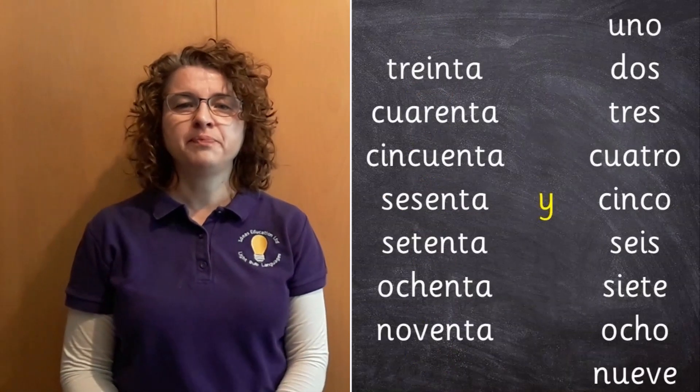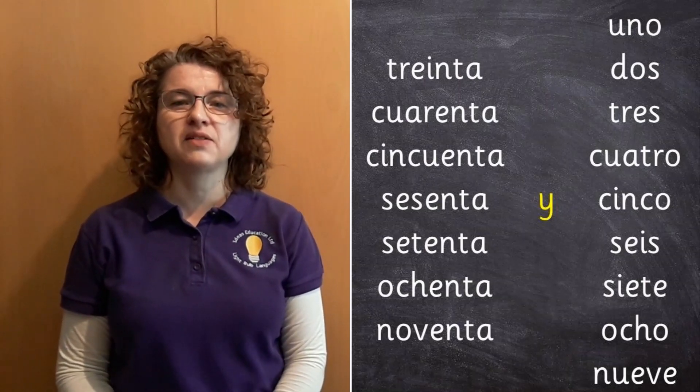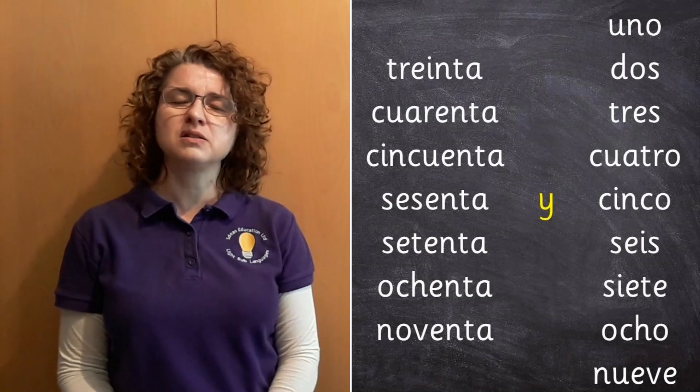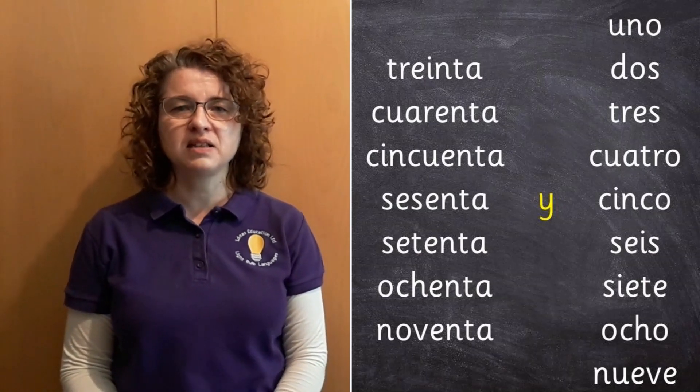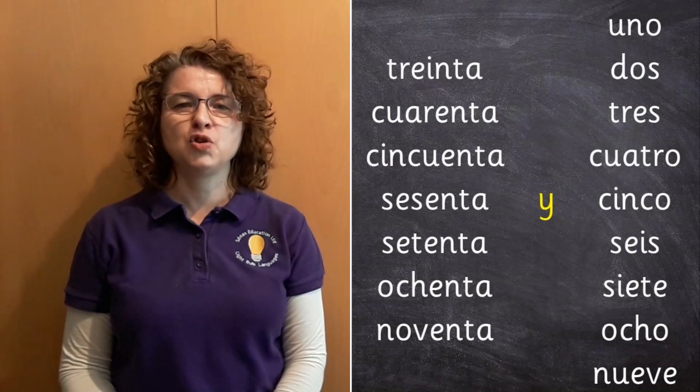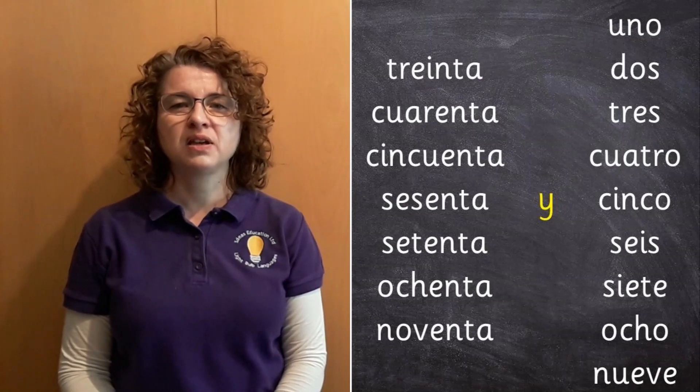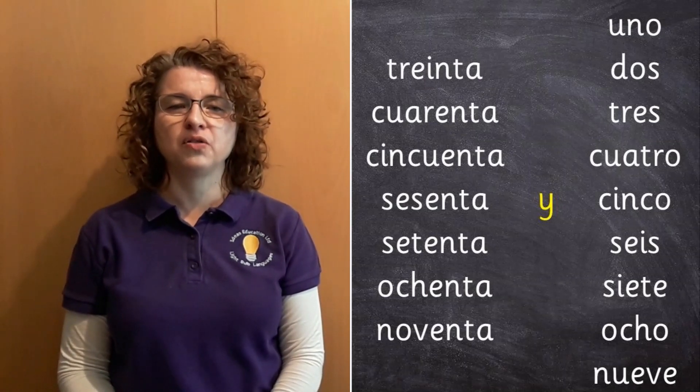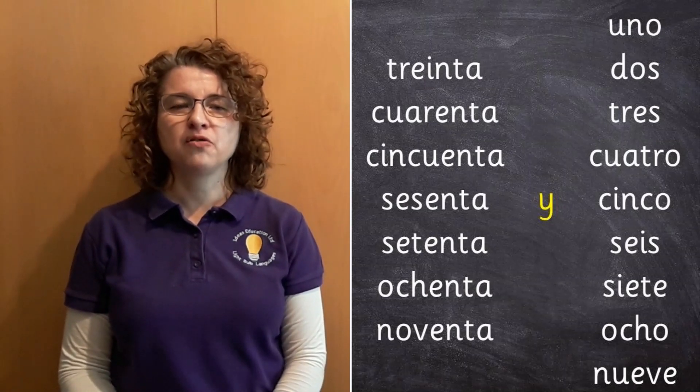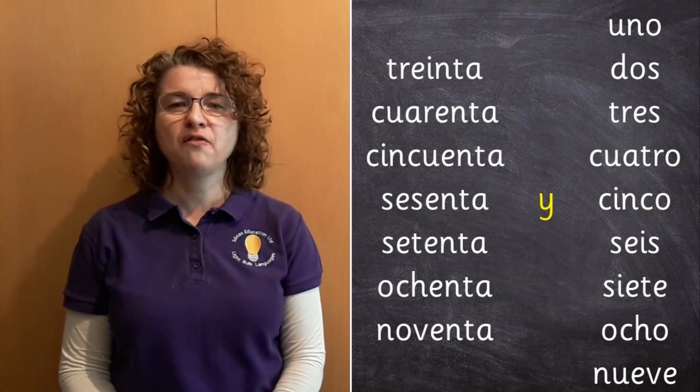Now you'll be pleased to hear that all of these new numbers, the 40s, 50s, 60s, 70s, 80s and 90s, all work in exactly the same way as the 30s. In other words, you put your ten, then you put i for and, and then you put the one on the end. So for example, how do you think you would say 47?